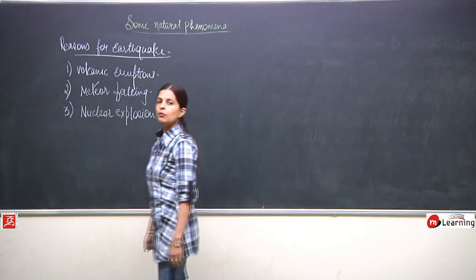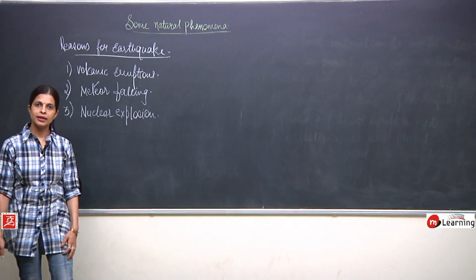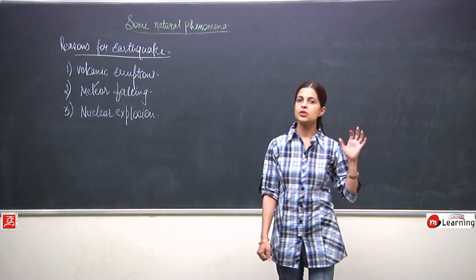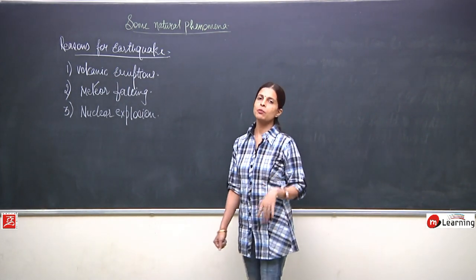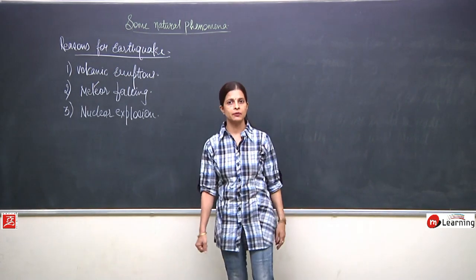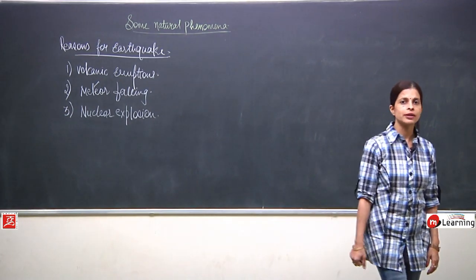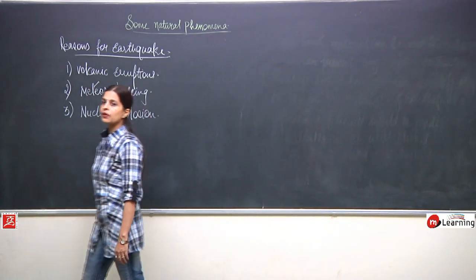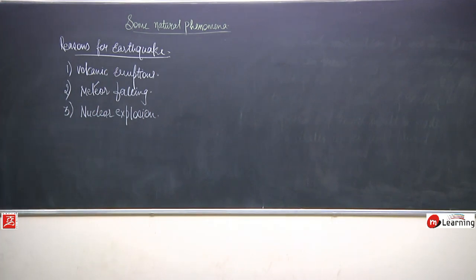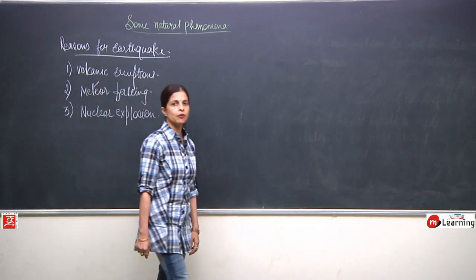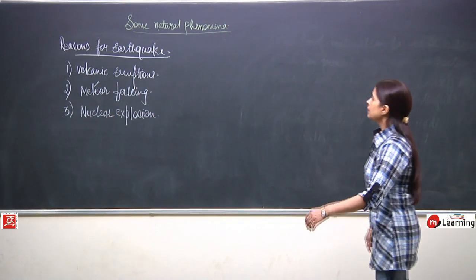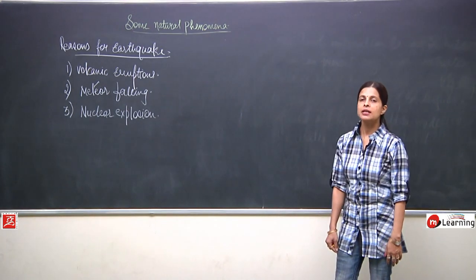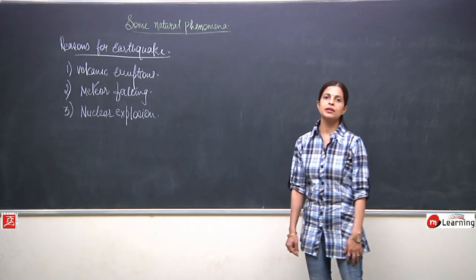So, to summarize the causes: earthquakes can be caused by volcanic eruptions, nuclear explosions — the energy released can be equal to the explosion of two to three atomic bombs, depending upon the magnitude of the earthquake — and meteor fallings. These three, along with tectonic plate movement, are the main reasons for the occurrence of earthquakes.